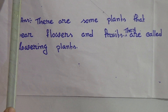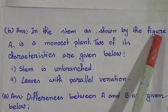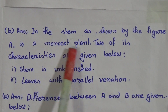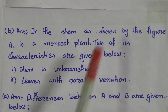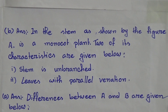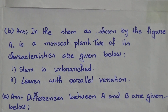In Answer B: Write down the characteristics of A. The plant shown in figure A is a monocot plant. Monocot plants are plants which have only one seed with no division. Dicot means seeds which are divided into two parts, like bean. Two of its characteristics are given below.